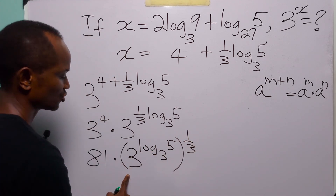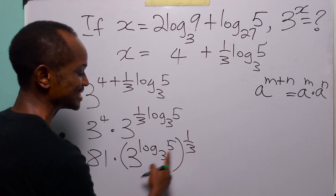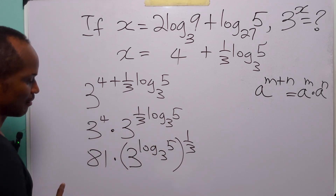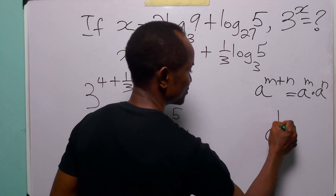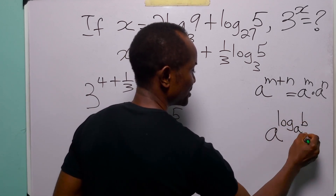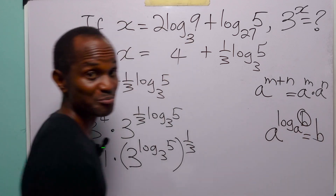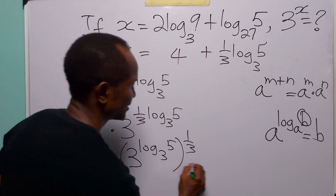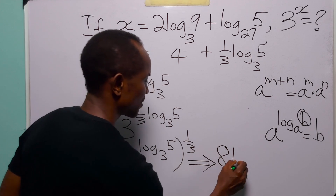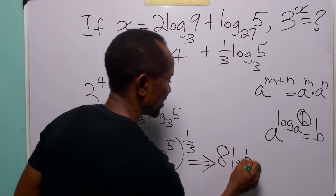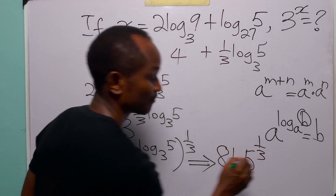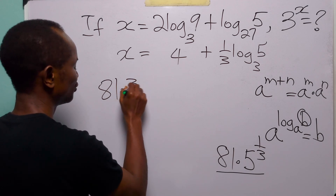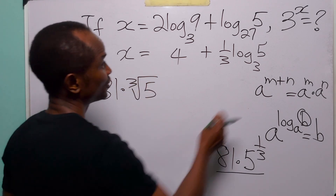To remove the bracket, we multiply the two powers. We also recall that a to the power log to base a of 5 equals 5, so 3 to the power log to base 3 of 5 equals 5. This gives us 81 times 5 to the power one-third, which can also be written as 81 times the cube root of 5.